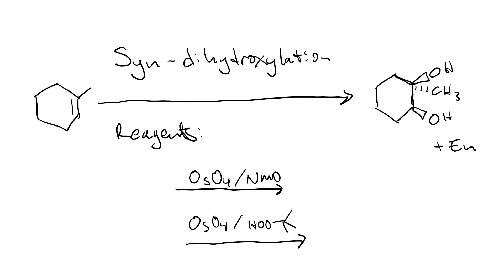The reagents you can use include osmium tetroxide. It bears noting that osmium tetroxide is toxic. So, if we use it in a catalytic amount and regenerate it with either NMO, or use a catalytic amount and regenerate it with t-butyl hydroperoxide, that's our best option for doing syn-dihydroxylation.